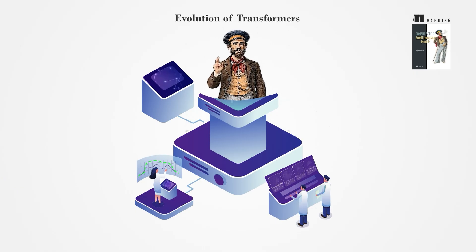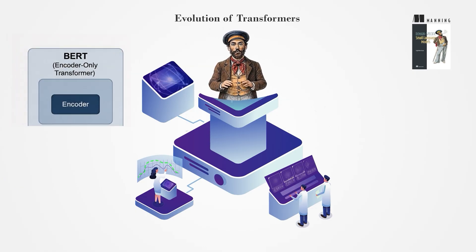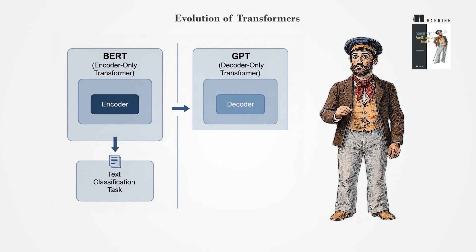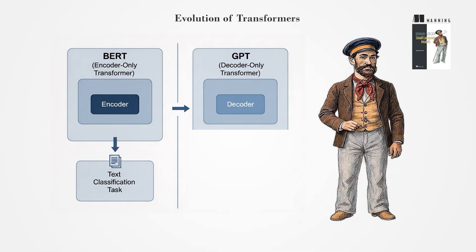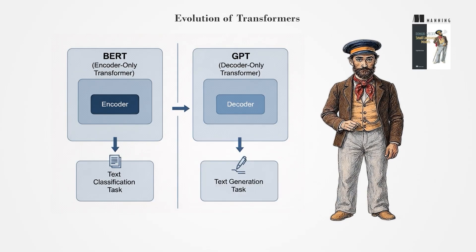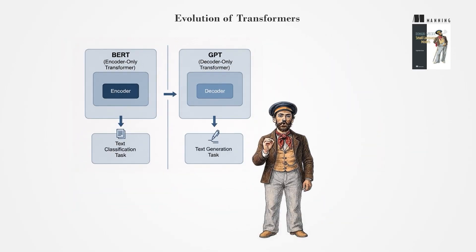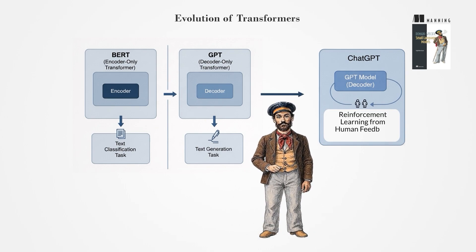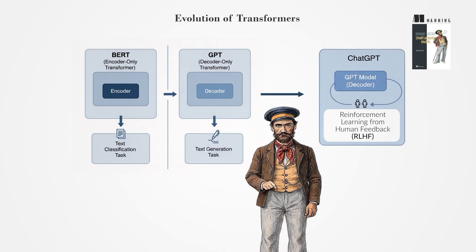Transformers have evolved into two main variants: BERT, which uses only the encoder for tasks like text classification, and GPT, which relies on the decoder for text generation. The models behind OpenAI's ChatGPT and the evolution of GPT incorporate reinforcement learning from human feedback, RLHF, for improved performance.